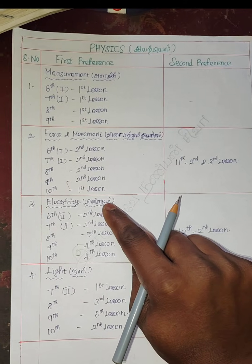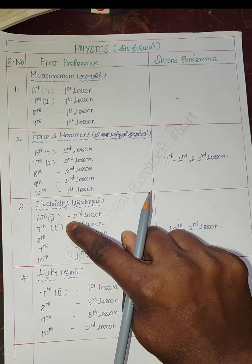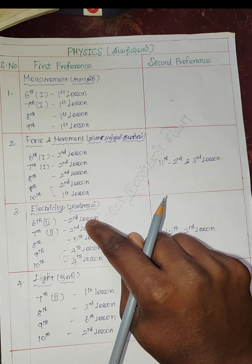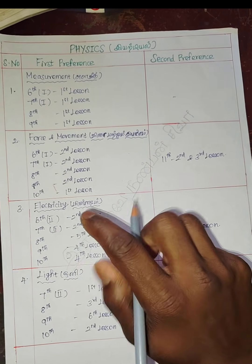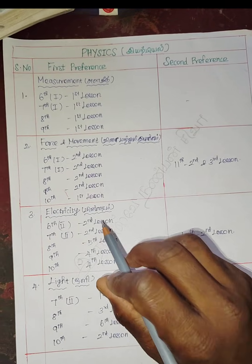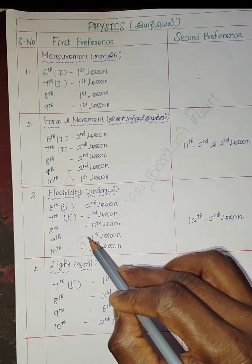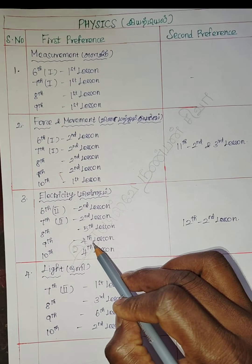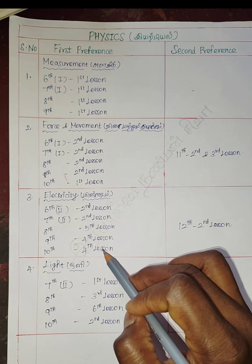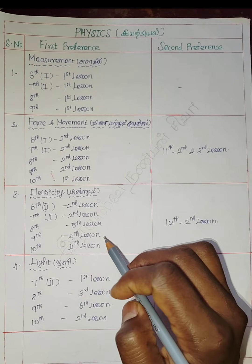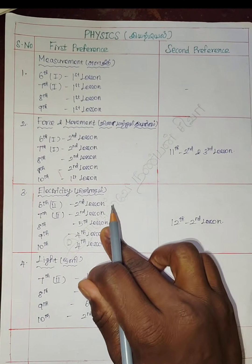Electricity: 6th — 2nd lesson; 7th — 5th lesson; 9th — 4th lesson; 10th — then 8th, 4th lesson. This is the 4th lesson. You can have the 4th lesson.